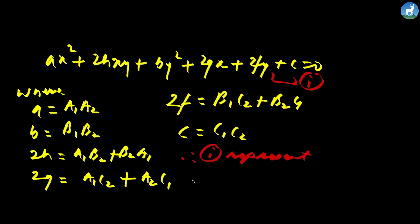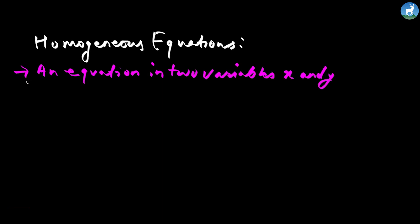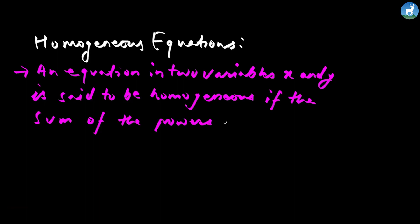This equation represents a pair of straight lines. We have the general equation of the first degree for each straight line and the second-degree equation as the general equation representing both. This equation 1 represents a pair of straight lines. Now, this equation supports a homogeneous equation. We have a homogeneous equation because the pair of straight lines passes through the origin — if the sum of the powers of x and y in each term is always the same.